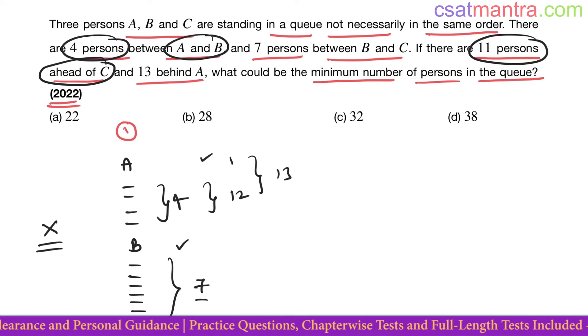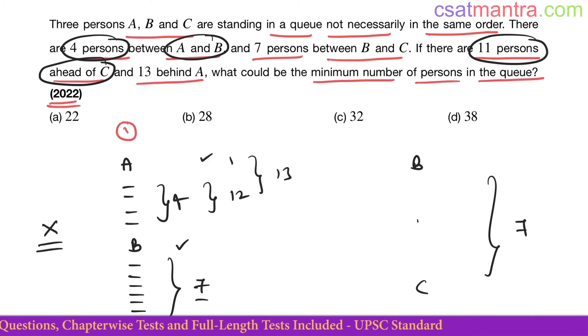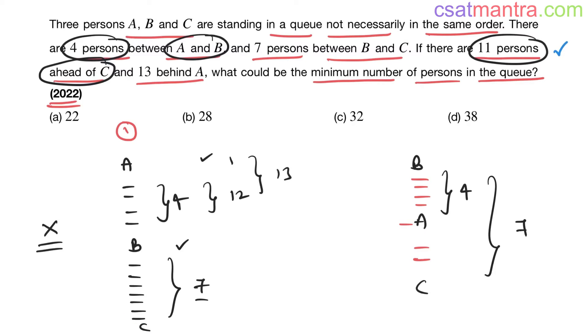Now let's look at another possibility. There are seven persons between B and C, seven persons, and four persons between A and B. See, four persons, fifth person is A, six seven. Seven persons between B and C.